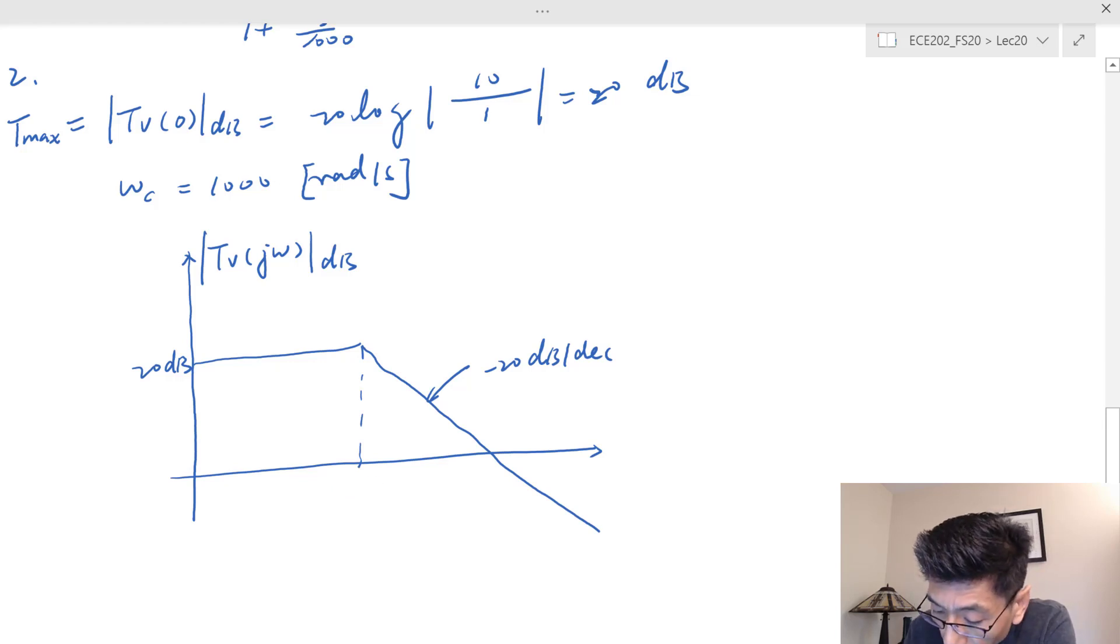The horizontal axis is radians per second. Let's see, this can be 10k. This is the 0 dB line.